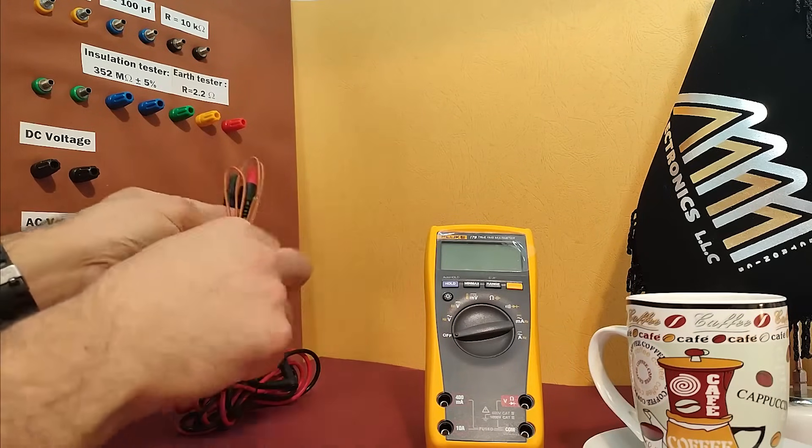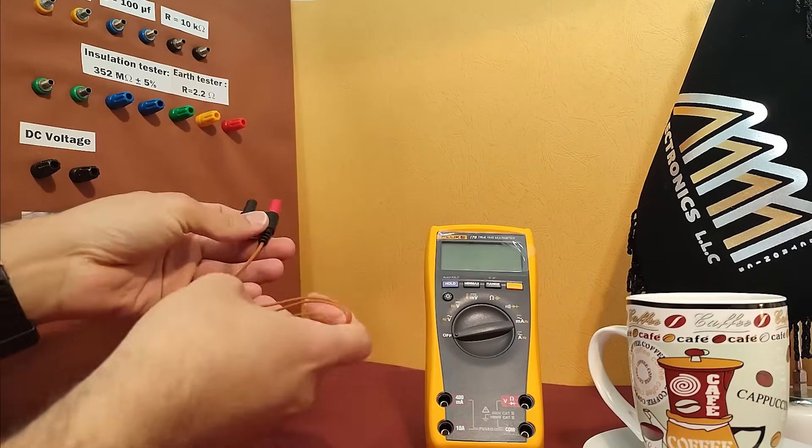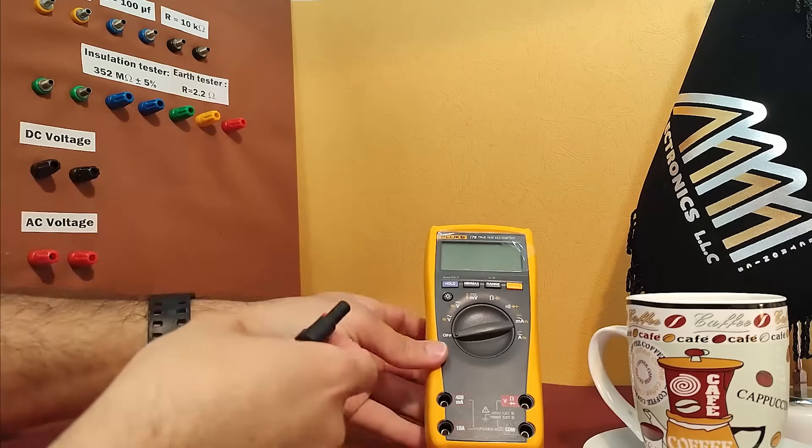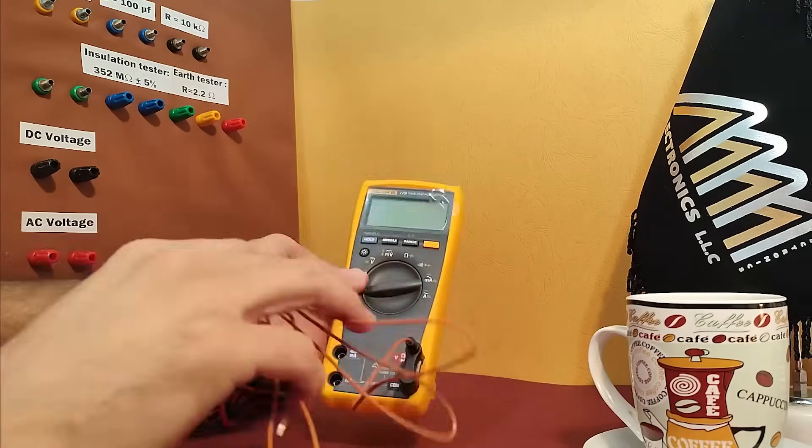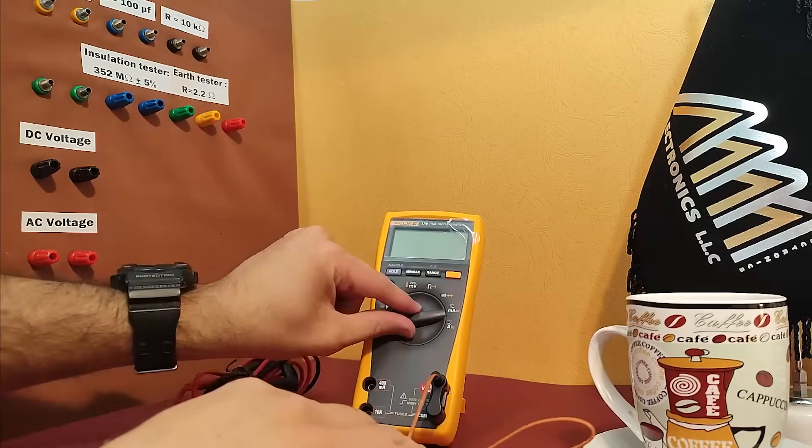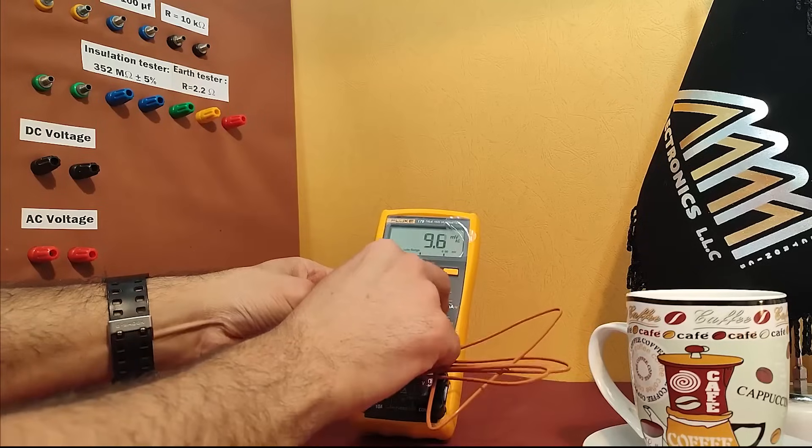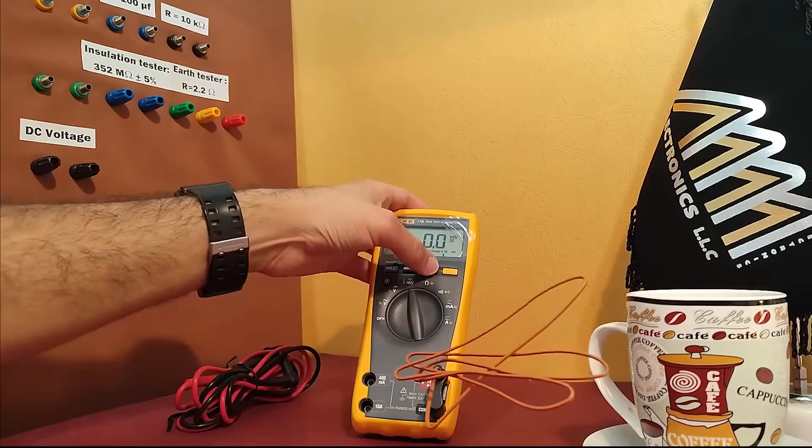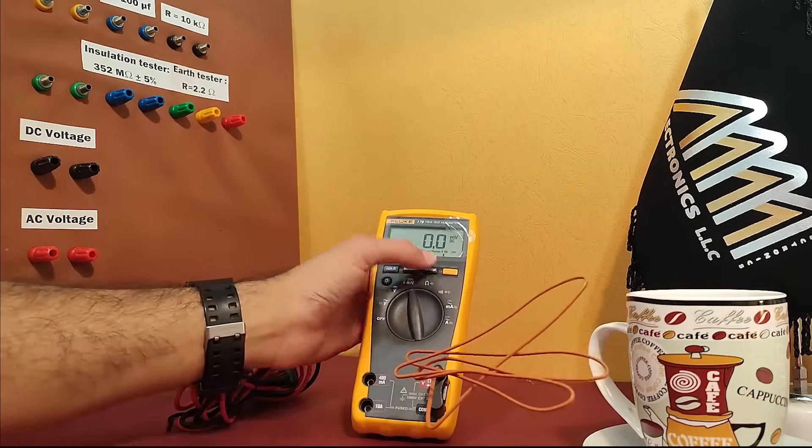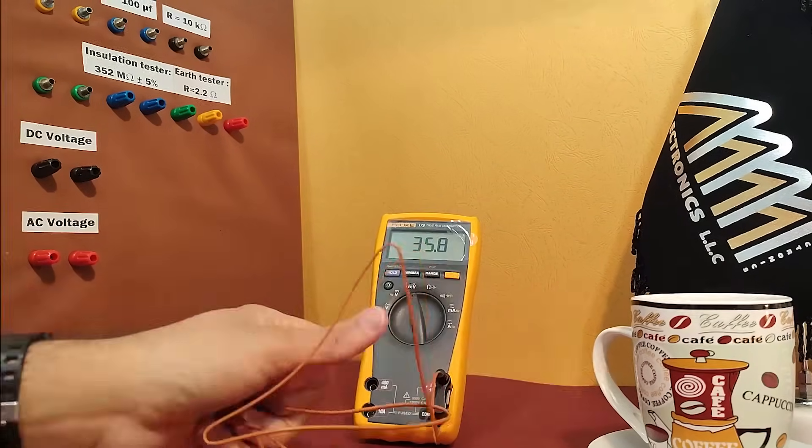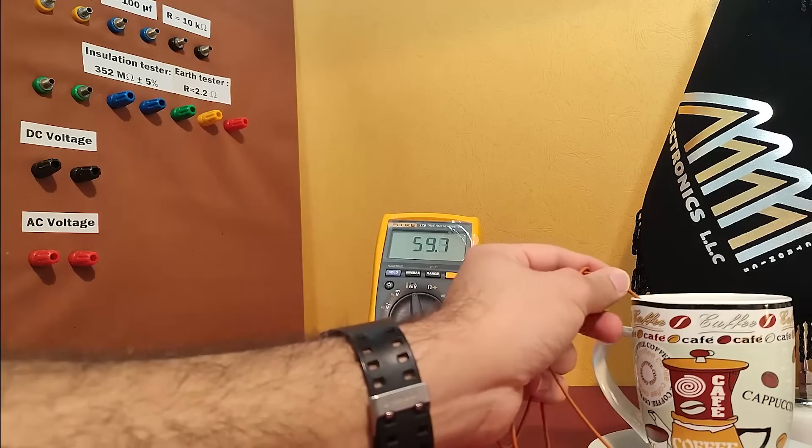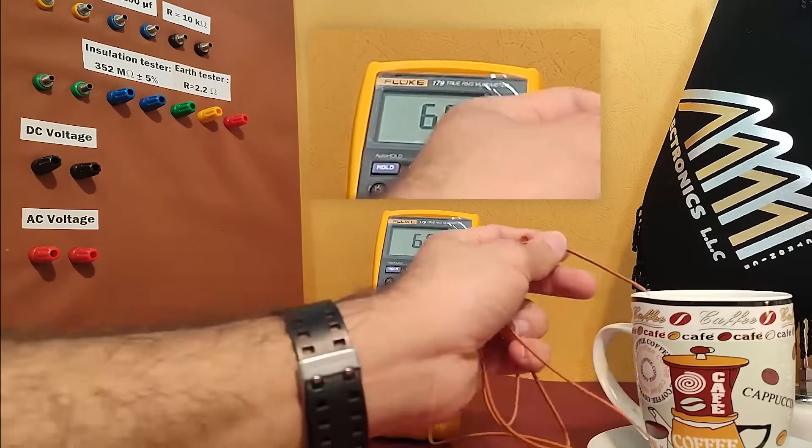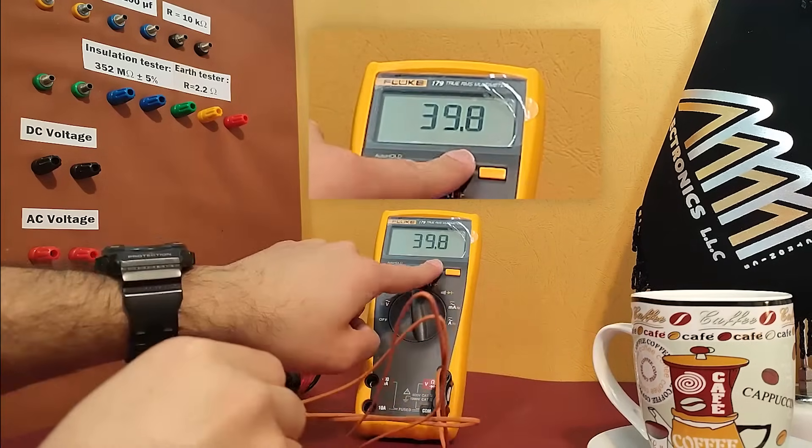To use the temperature probe with the FLOG 179 multimeter simply plug it into the designated input on the multimeter and place the probe on the component you want to measure the temperature of. The temperature will be displayed on the screen in either Fahrenheit or Celsius depending on your preference.